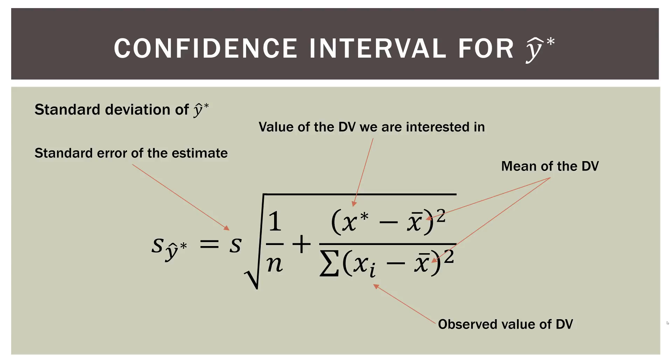So X of i is the observed value of the dependent variable. And that is used in the summation equation down here. So you find the difference between the observed value and the mean value, you square them and then add them up. We've actually already done that. And then of course, n is the number of observations. We have this. We either have it already, it's in the regression output, or it's easy to find. So no need to freak out.